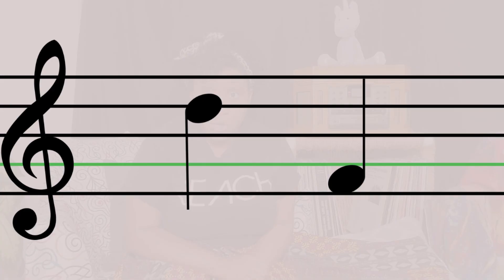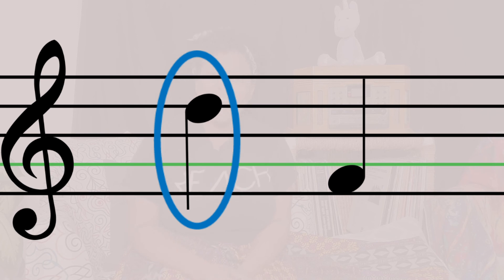So a note like DO will be lower on the pitch. We know from the last episode that the treble clef circles around the G line. But what does that even mean? If you see any note on that line, it's a G note.